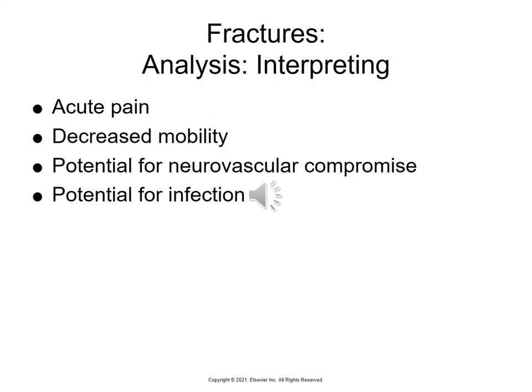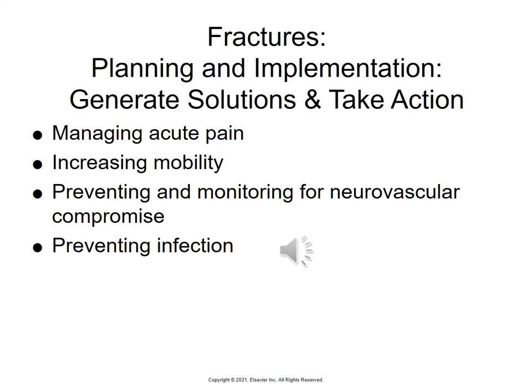Our nursing concerns include acute pain, decreased mobility, potential for neurovascular compromise, and potential for infection. We want to ensure adequate pain control, that patients can ambulate as independently as possible with or without devices, that they have adequate blood flow to the extremity, and that they remain free from infection.